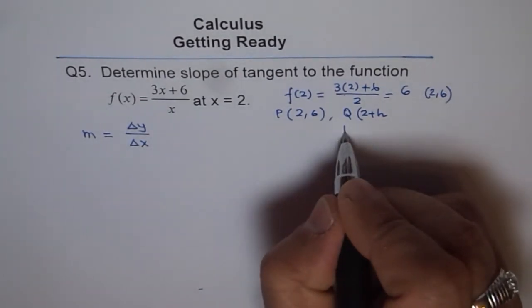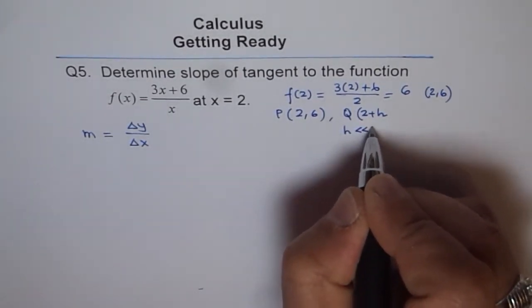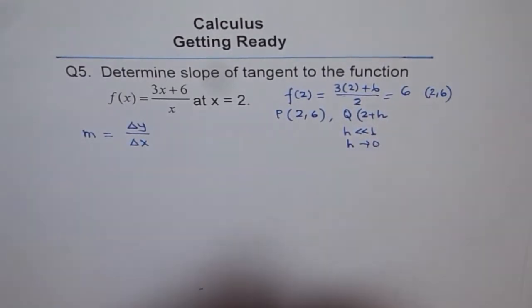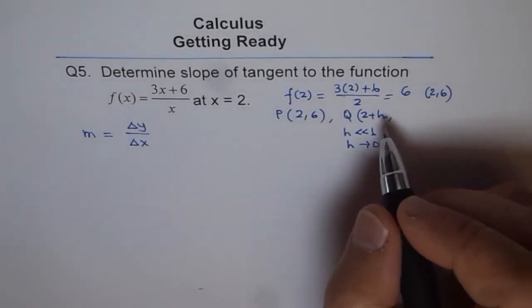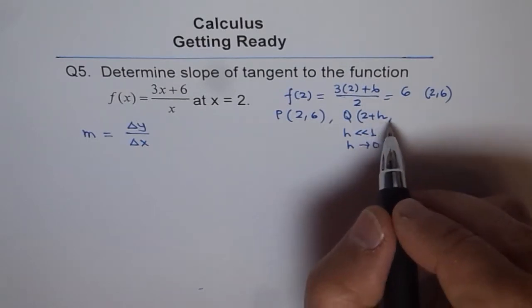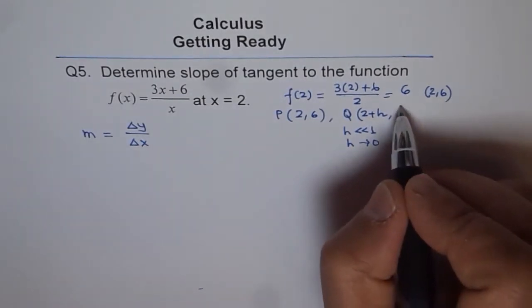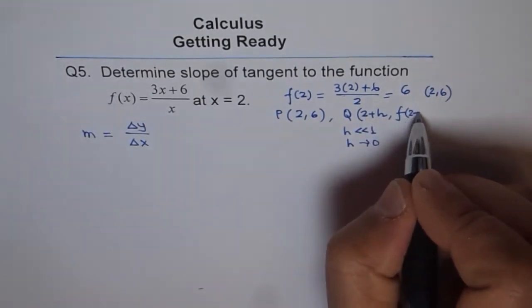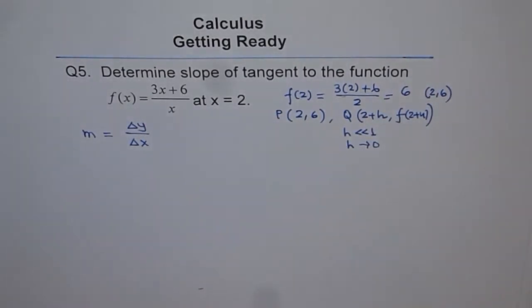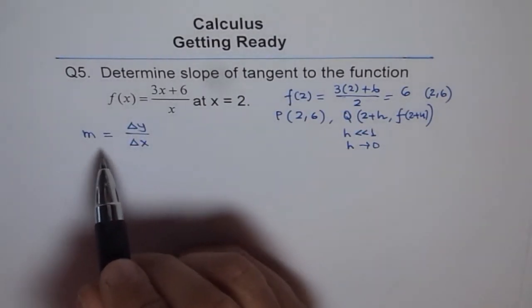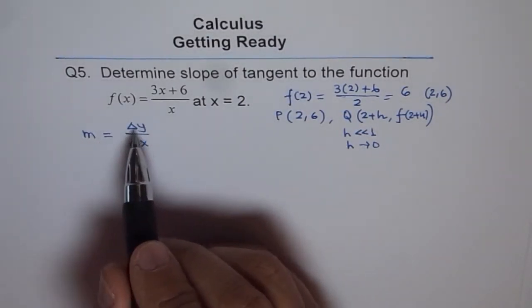That's what we mean slightly away, where h is very small. I say very very small as compared to 1, h could be approaching 0. It's very small, so that point is very close to 2. At that point, what is the y value? Y value we don't know. So we will write f of, instead of x, the x value of (2 + h).